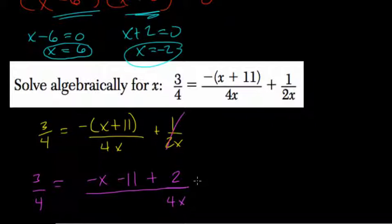Here, negative 11 plus 2, that equals negative 9. So negative 9 over 4x. I'm going to multiply both sides by 4x as well to get rid of the 4x in the denominator.